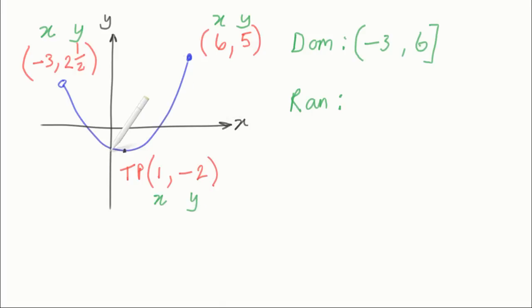So it's quite clear that the lowest value on that graph, the lowest y value, is minus 2, and that point is actually included because it's actually on the graph, so that means that's a square bracket.